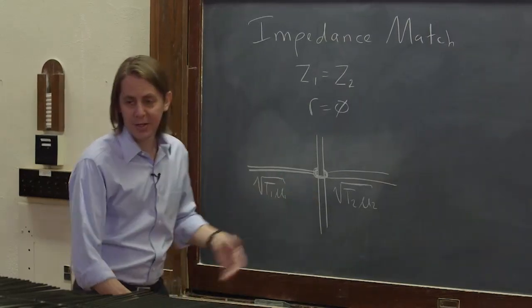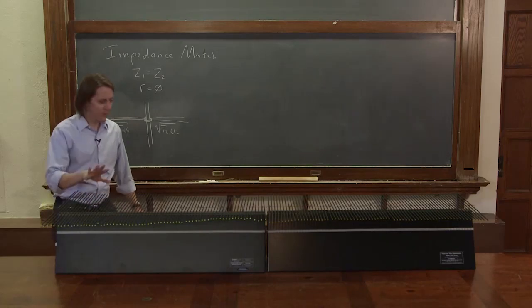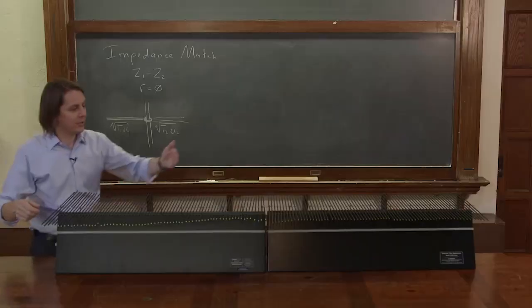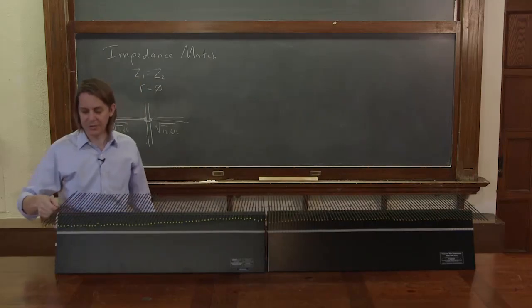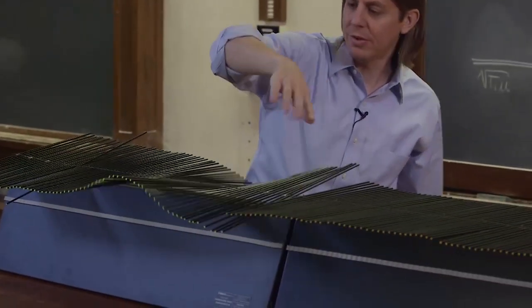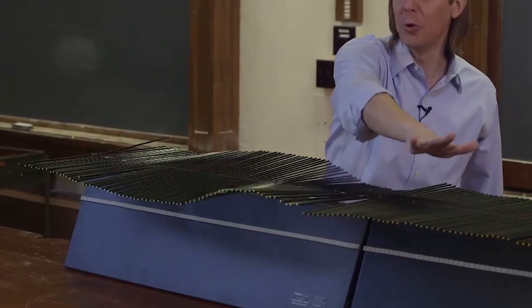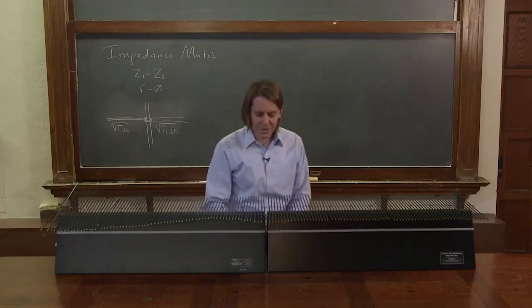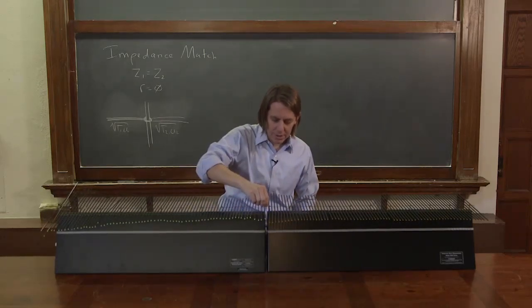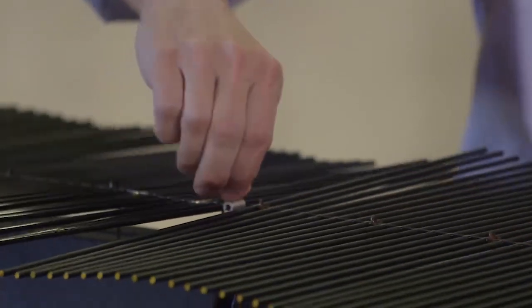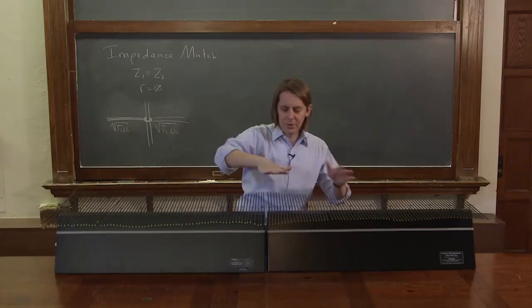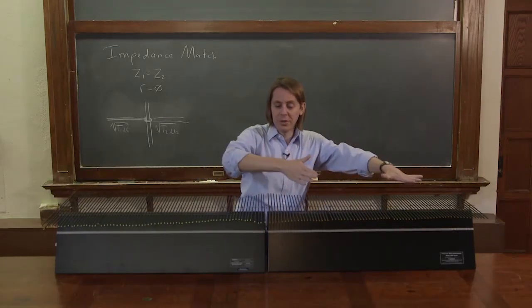One way is to just have the same medium, and I can kind of show you that. Here we're back with the wave machine. Before, you saw something with one impedance and something with a different impedance. Well, now I've just got two identical ones. So if I just give this one a little pulse, the pulse goes up, it hits an area of very low impedance — basically an open boundary — and it reflects a positive pulse back, just like you would expect. But now I can couple these two together, and at the interface they now have the same impedance — they're impedance matched.